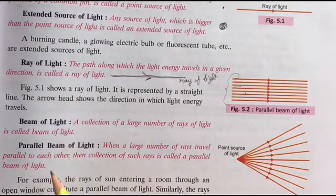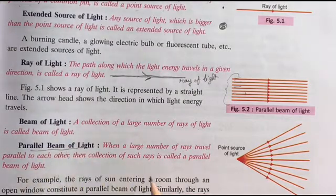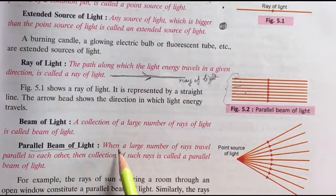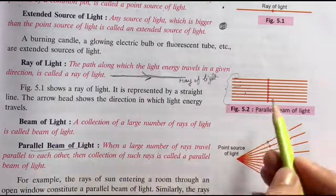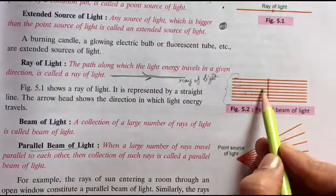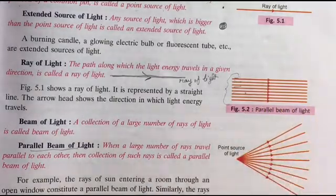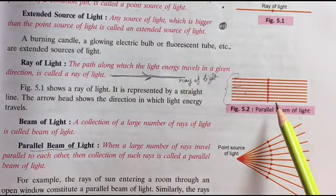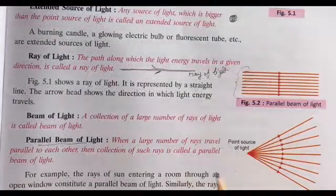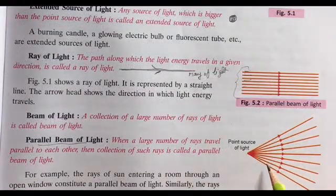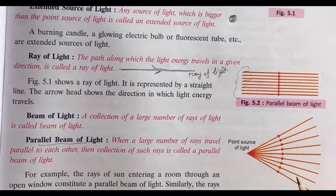Now this beam of light can be of three types: parallel beam of light. Parallel beam of light is when a large number of rays are traveling parallel to each other. Look, they are parallel - they are not cutting each other. They are called the parallel beam of light.